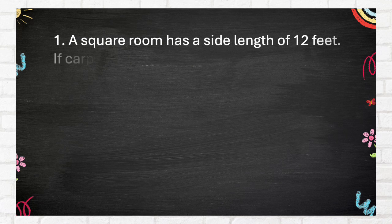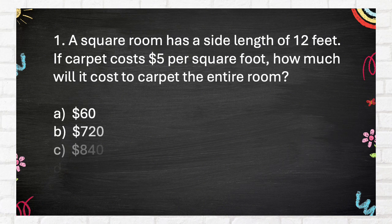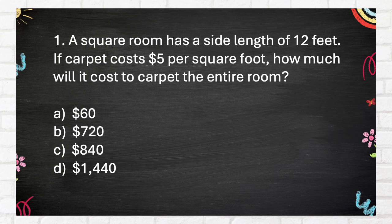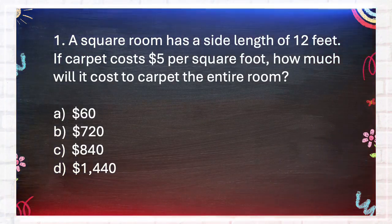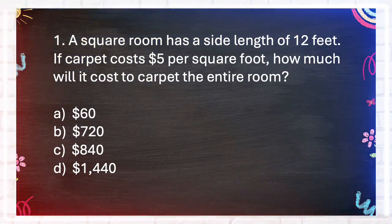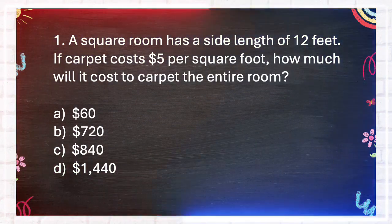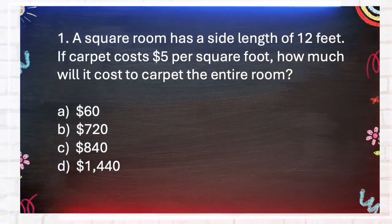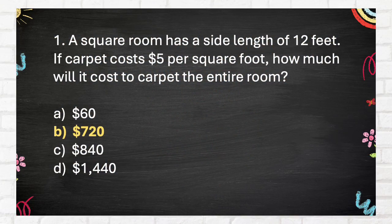Question number 1. A square room has a side length of 12 feet. If carpet costs $5 per square foot, how much will it cost to carpet the entire room? A. $60, B. $720, C. $840, D. $1,440. The answer is B. $720.